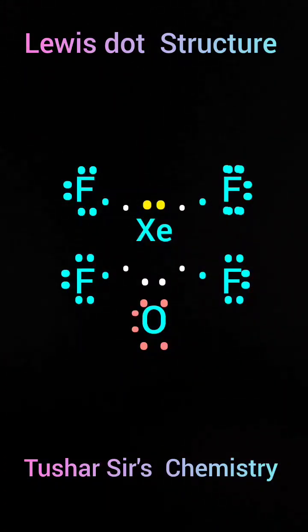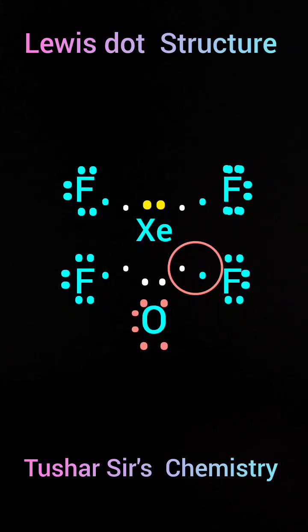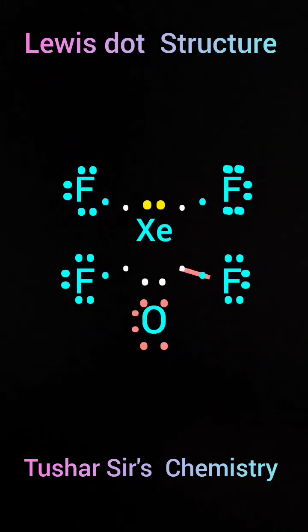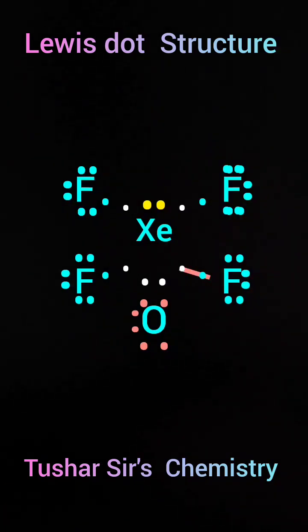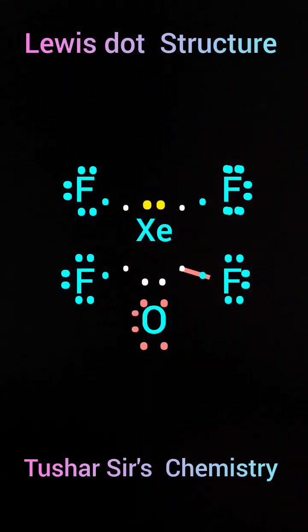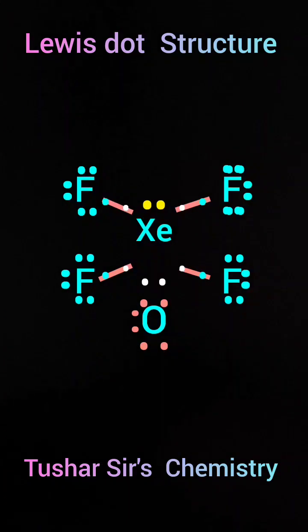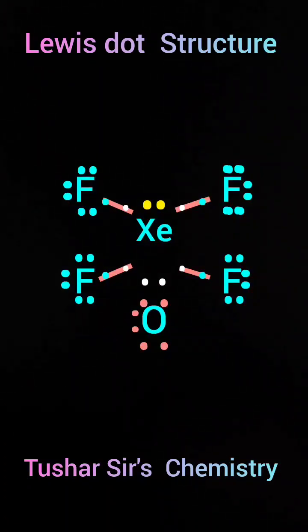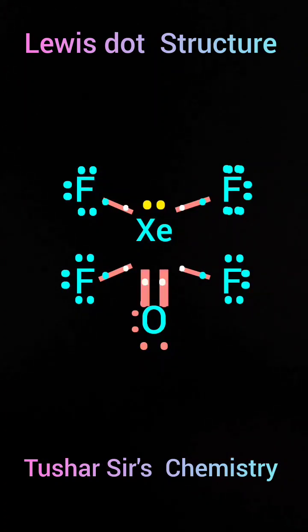F is showing one electron to xenon and xenon is showing one electron to F. This is the story of four fluorine atoms. You just join those two dots, you will get a single bond, single dash. Similarly, four single bonds will be there. With oxygen, oxygen has shown two electrons to xenon and xenon has shown two electrons to oxygen. So there will be a double bond.